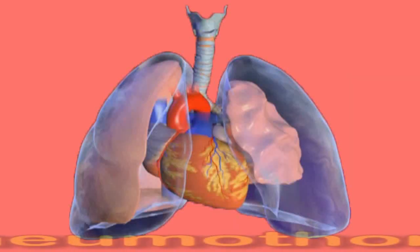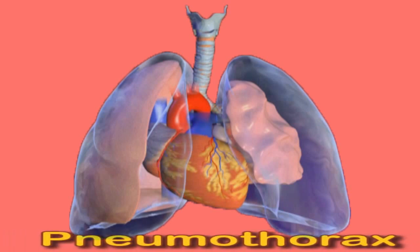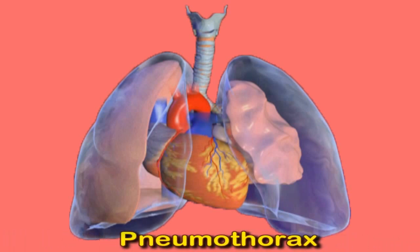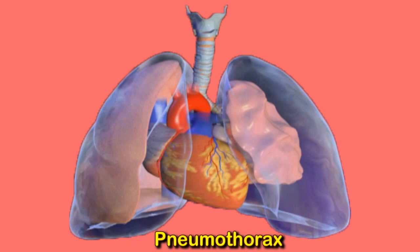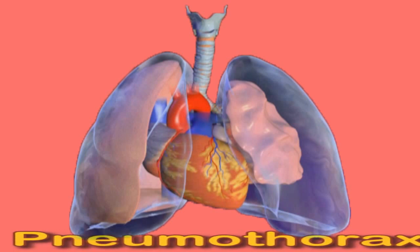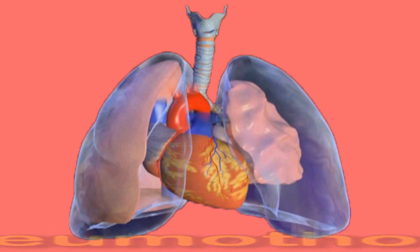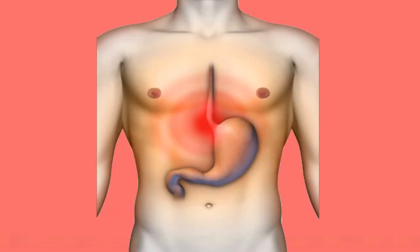Pneumothorax, typically known as a collapsed lung, occurs when the air in the space between the lungs and chest wall puts pressure on a lung. This air prevents the lung from expanding, eventually leading to a partial or complete collapse of the lung. People often experience sharp pain in the chest, sometimes just on one side.